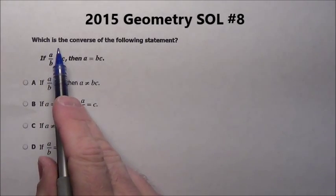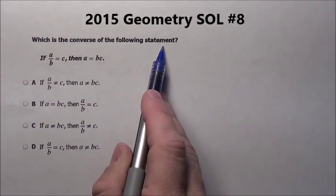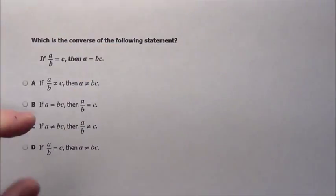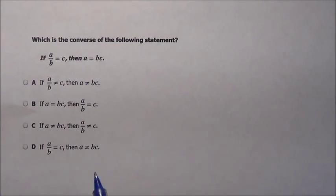Problem number eight. It says which is the converse of the following statement. Converse - we're just simply going to flip them. You put your shoes on the wrong feet. So we think of converse tennis shoes.